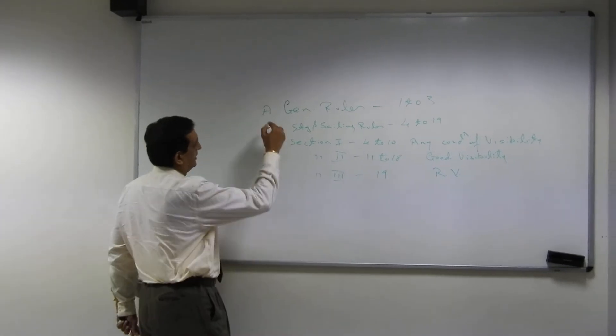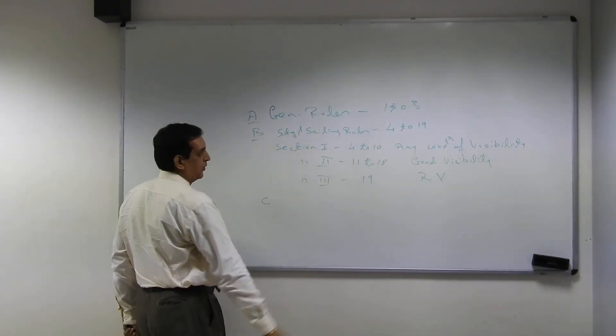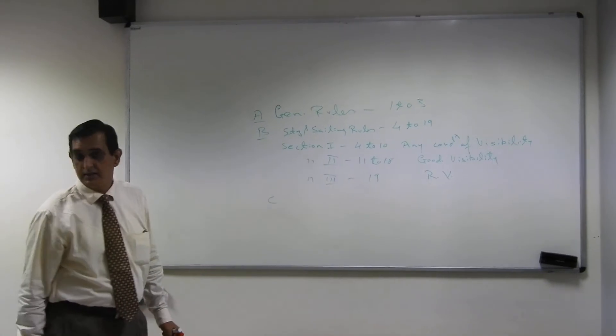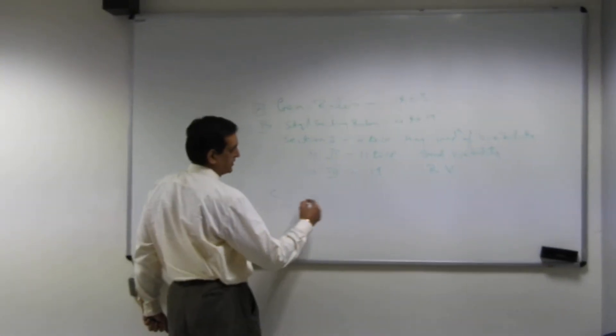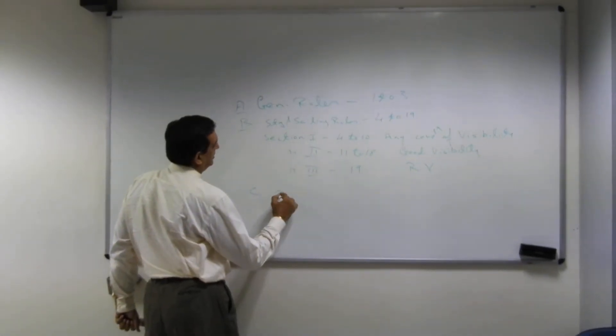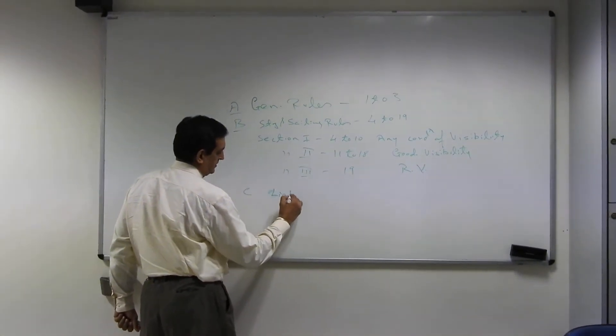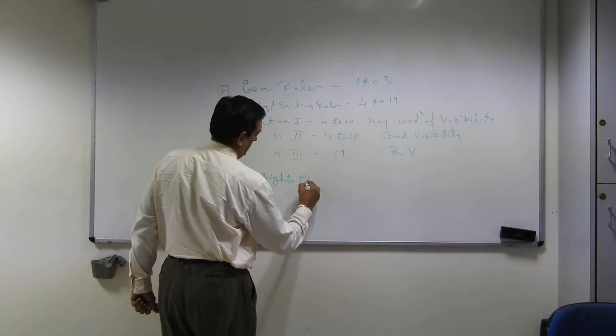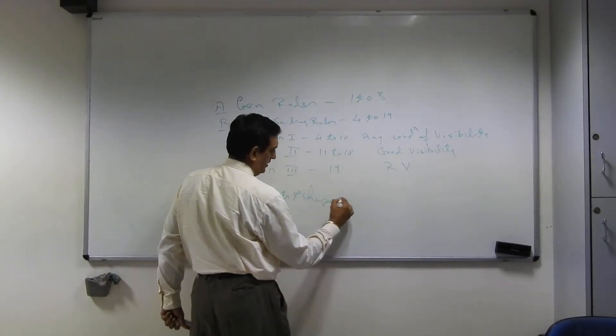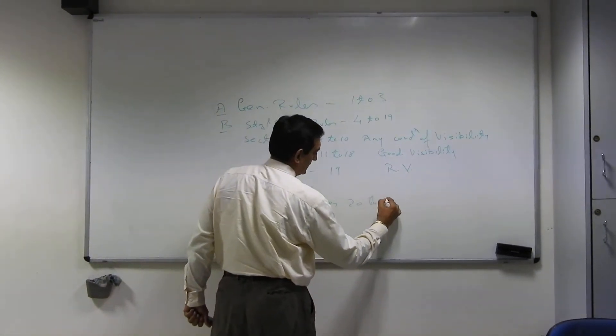Then we have got Part C. What does C deal with? Lights and shapes, and that starts from rule 20 to 31.